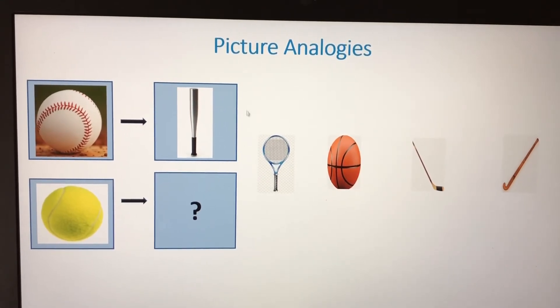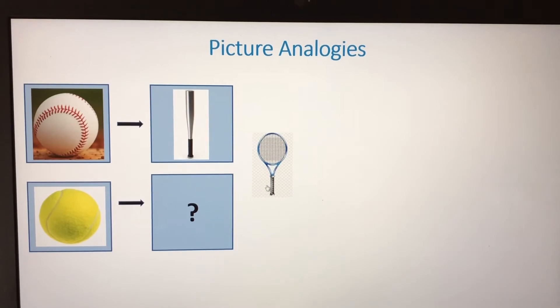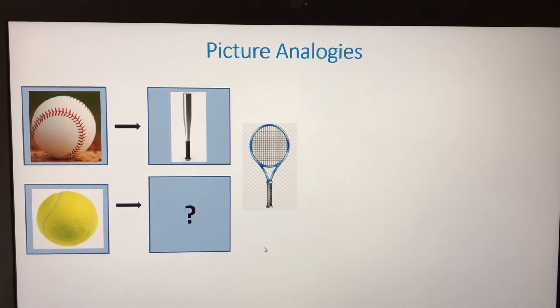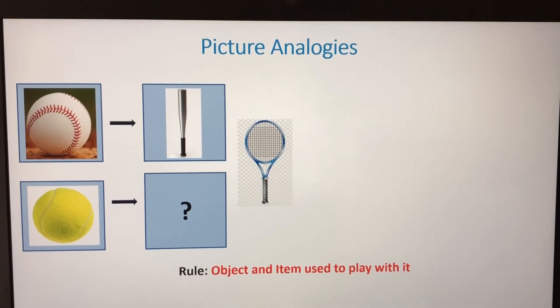What will be used to play with a tennis ball? A tennis bat. The tennis bat is the answer because the rule is object and item used to play with it.